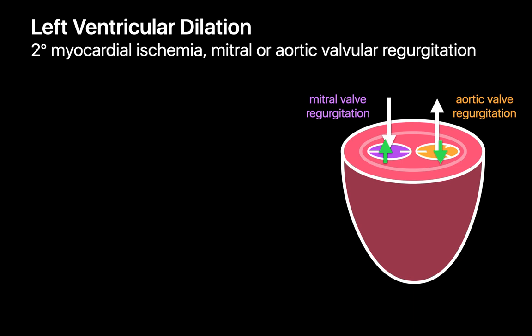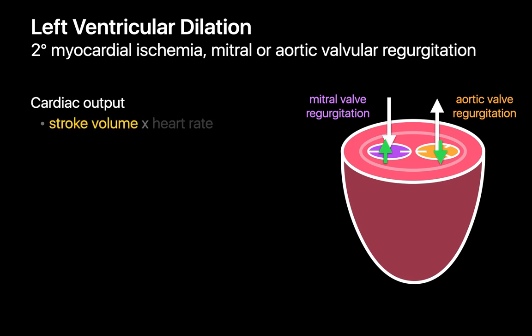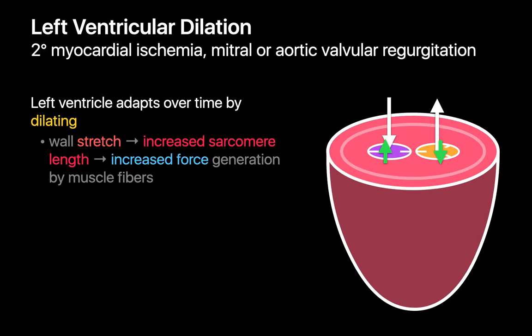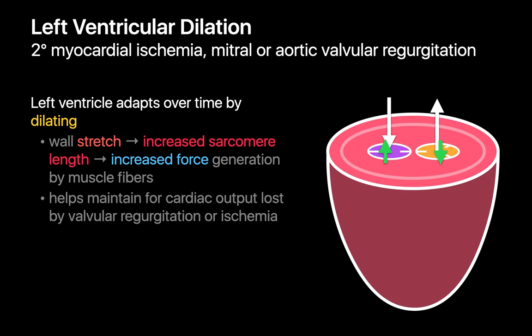If any of these three conditions threatens to compromise cardiac output, it can be provisionally maintained by either increasing heart rate — at the cost of heightened oxygen demand and increased ischemic risk — or by increasing stroke volume. When the left ventricle dilates, individual cardiac myocytes get stretched, which increases sarcomere length. Increased sarcomere length results in increased force generation due to a basic property of cardiac muscle called length-dependent activation — as sarcomere length increases, the calcium sensitivity of troponin rises, increasing tension developed by a muscle fiber. This can help compensate for cardiac output loss from valvular regurgitation or myocardial ischemia.